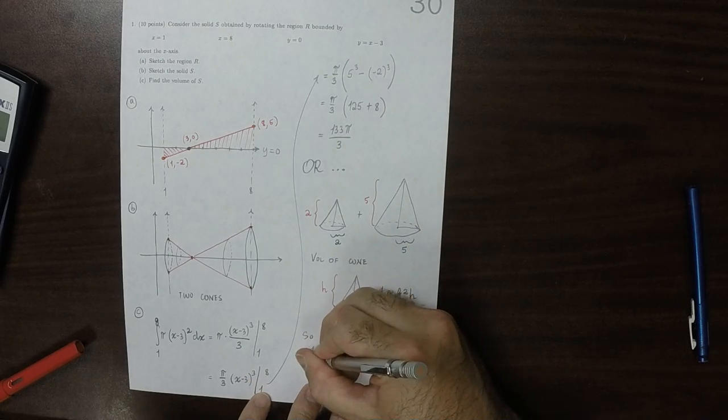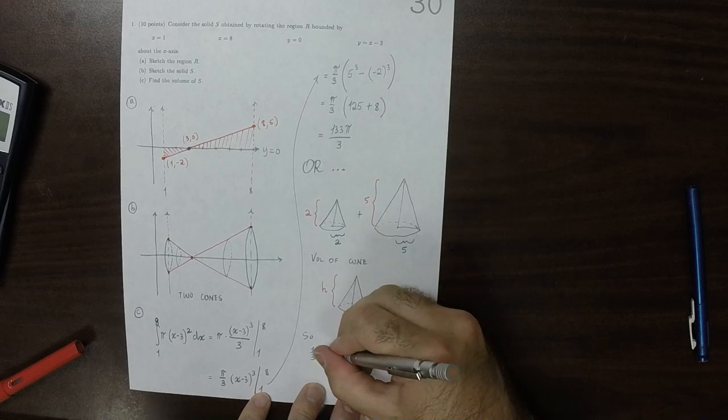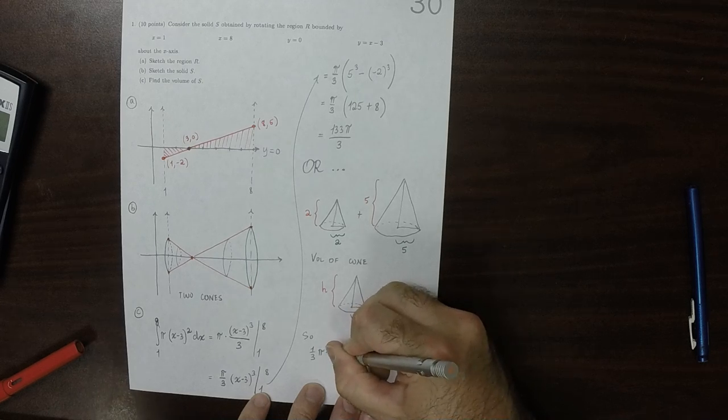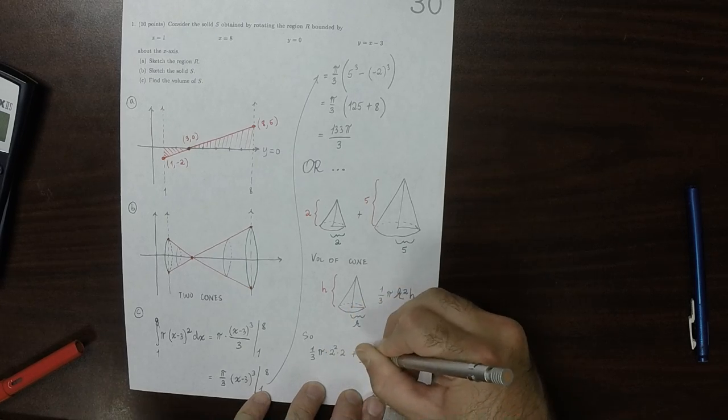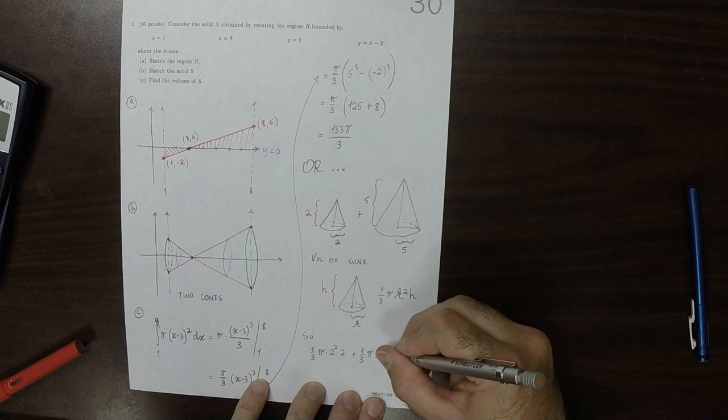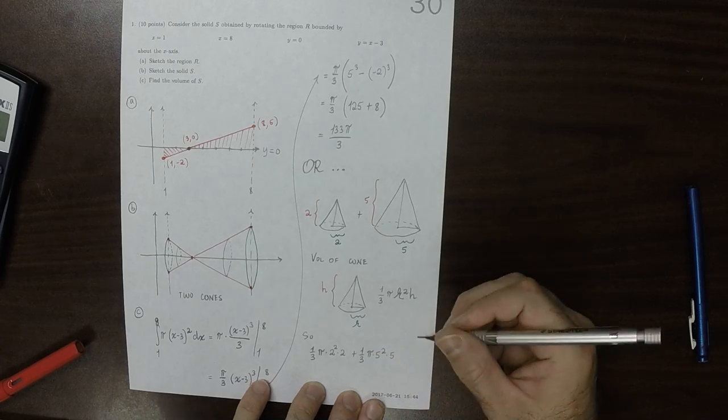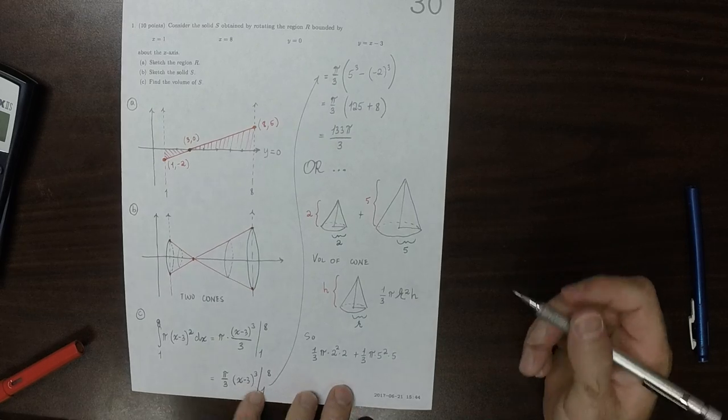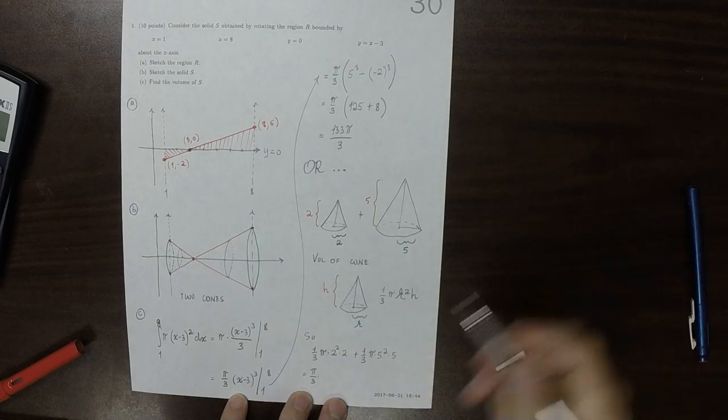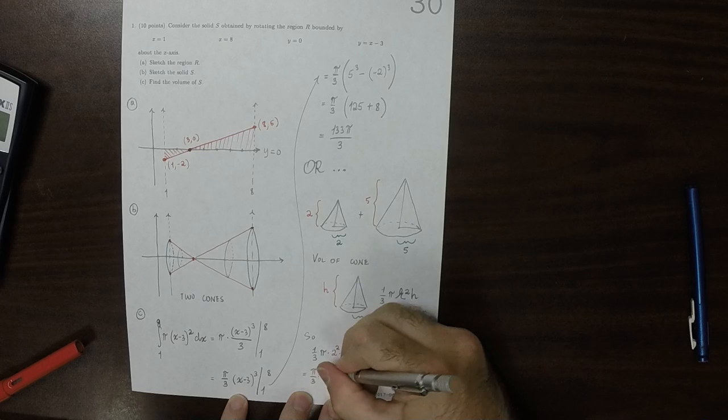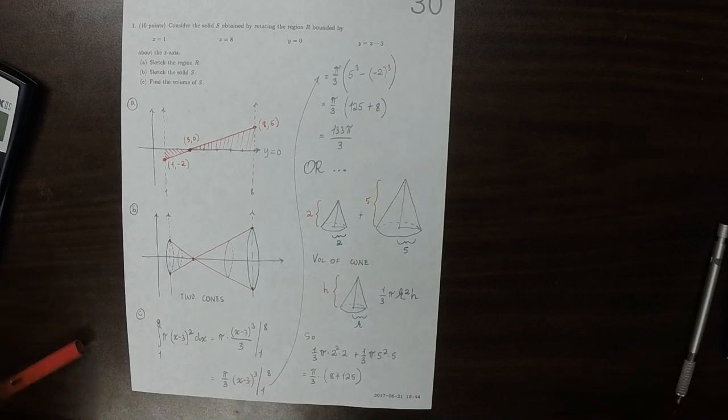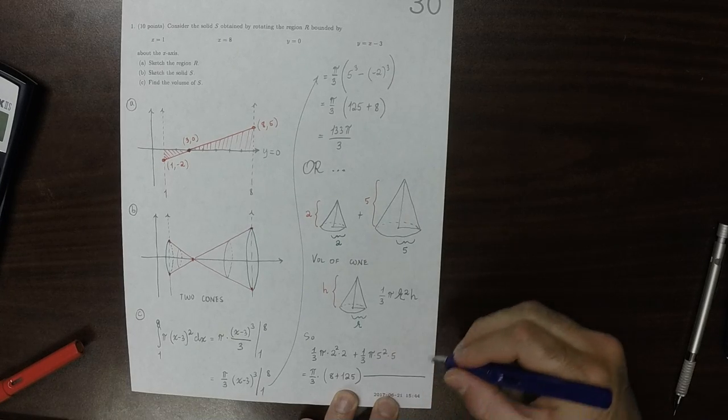So that would be 1 third pi, and then the radius squared, so that's times 2 squared, and then times the height which is 2. And then plus 1 third pi times the radius squared which is 5. And so of course you factor out the 1 third and the pi. That's pi over 3 multiplied by, well, that's 8 and that's 125, which of course is the answer.